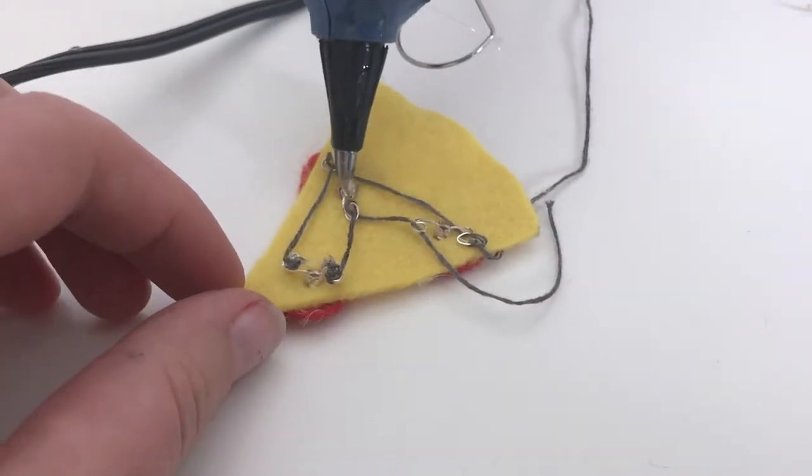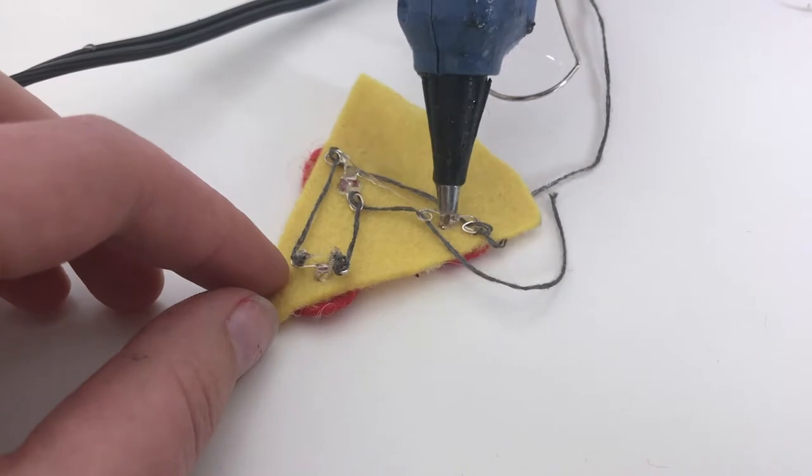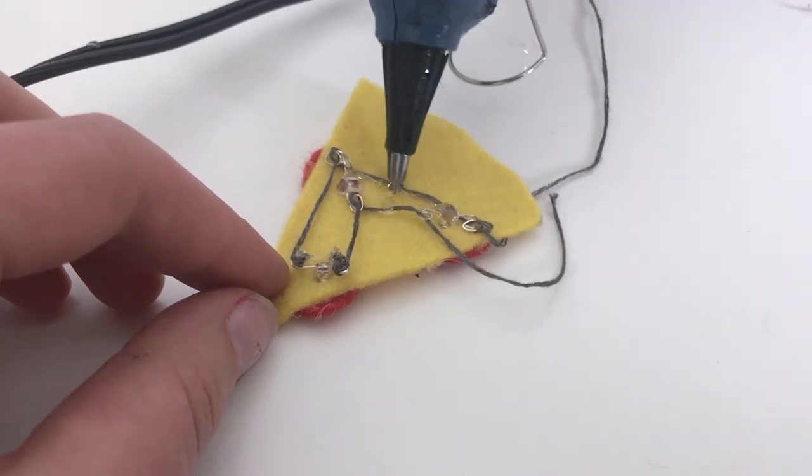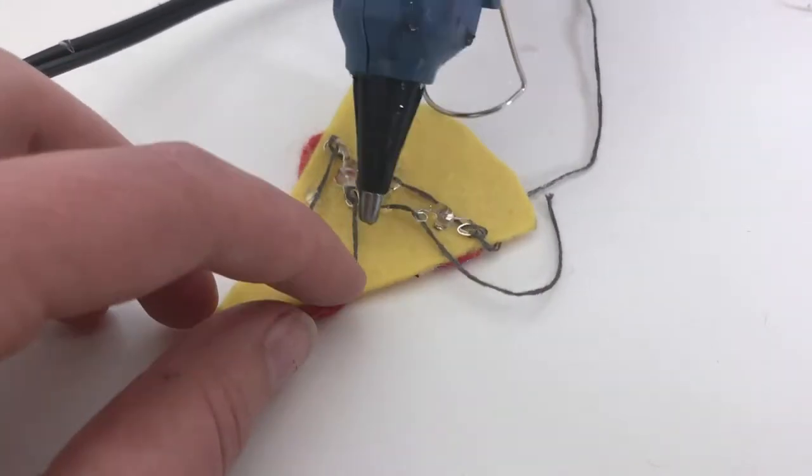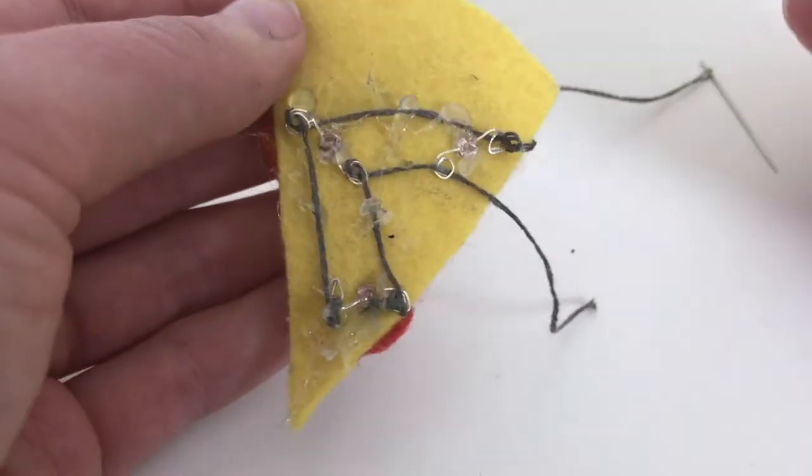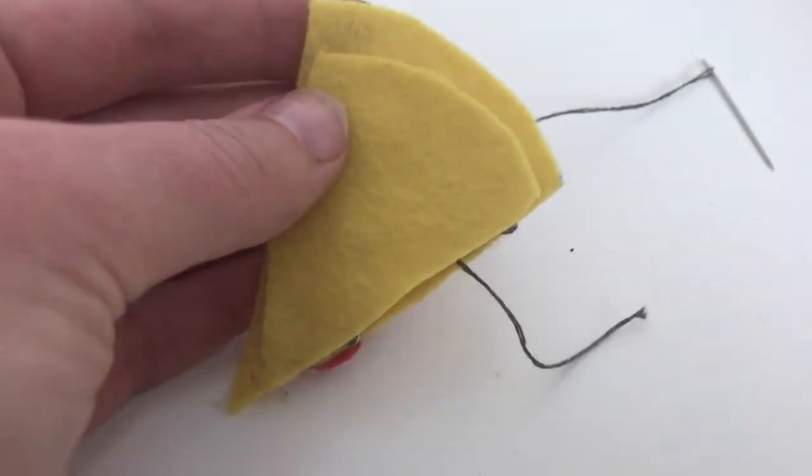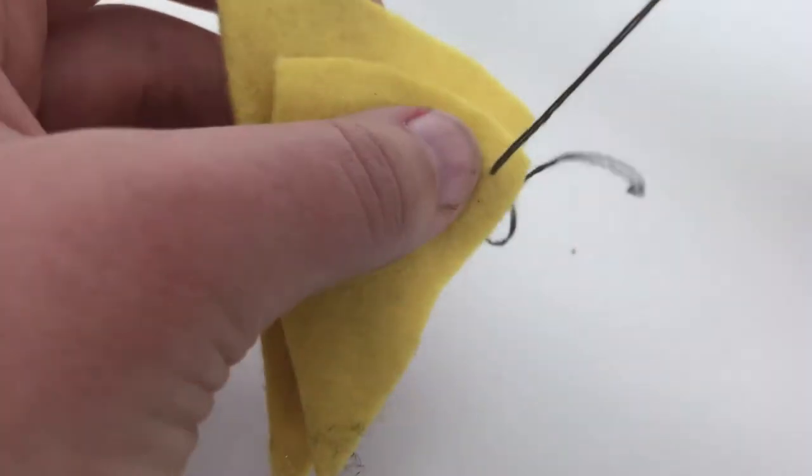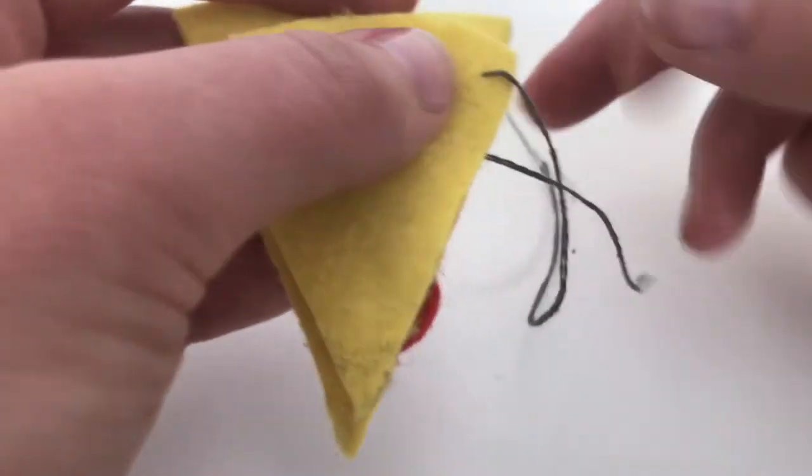Use your glue to hold the LEDs in place. You can also use small dabs of glue to keep the thread down. Take the second yellow piece of felt that you made earlier. You can trim it down slightly so that it doesn't show in the front. Position it over the circuit and thread the ends of the conductive thread through.